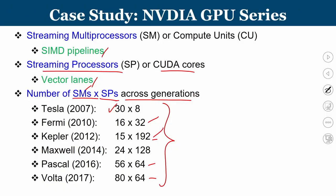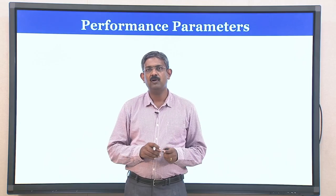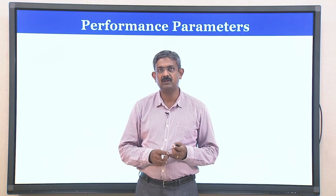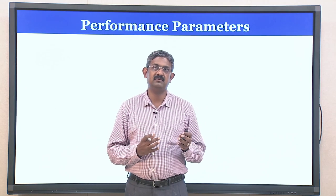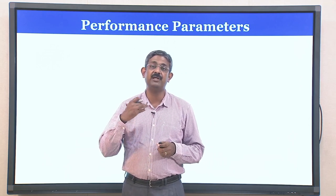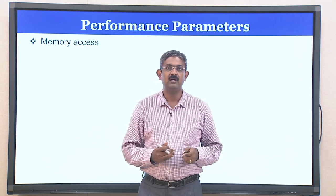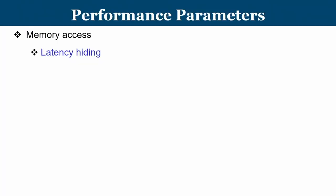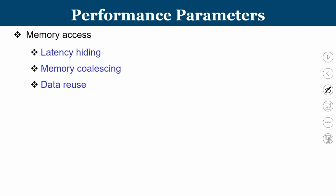Now let us look at GPU performance parameters — what criteria assess GPU performance and what optimization techniques can improve it. From a memory access perspective, we will explore three things: latency hiding through certain techniques, memory coalescing, and data reuse — all used to improve GPU performance. Then we will look at SIMD utilization improvement through divergence-free execution, and how CPU-to-GPU transfers can be done more efficiently.